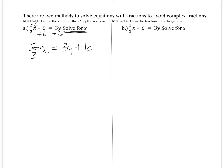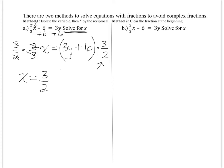Instead of dividing by a fraction, remember that dividing by a fraction is the same as multiplying by the reciprocal. So what I can do is multiply both sides by the reciprocal, 3 over 2. Make sure you put 3y plus 6 in parentheses first, then multiply by 3 over 2. The 3 over 2 and 2 thirds cancel out, and you get x equals 3 over 2 times the quantity 3y plus 6. That answer is acceptable.